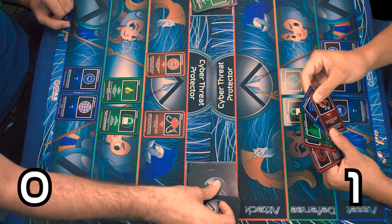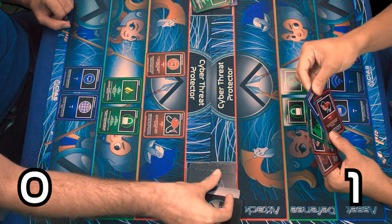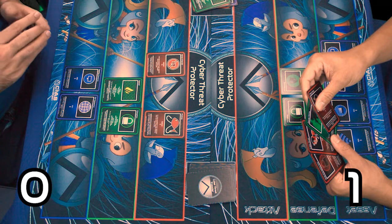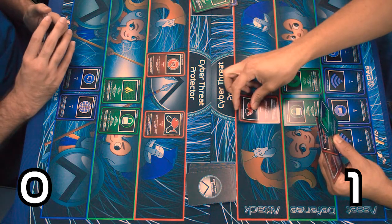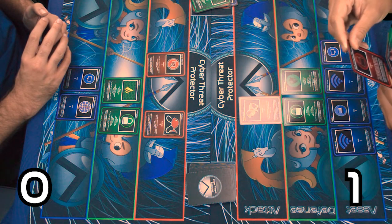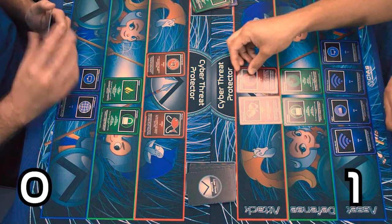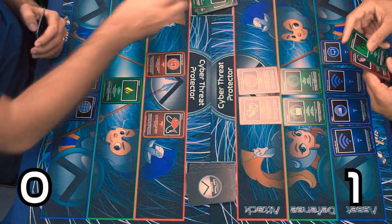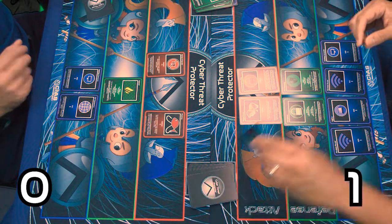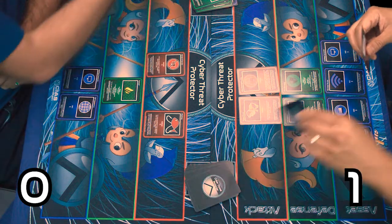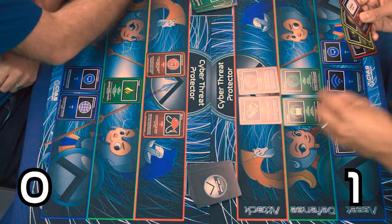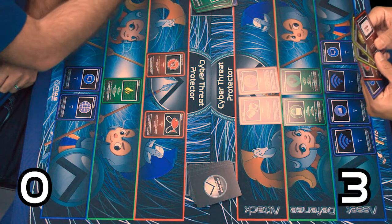All righty. I will play a wireless router and one Trojan horse and a weak encryption key. Oh, I removed my defense. All right, end my turn. So that is two points for me, minus two, another zero. And you gained four, minus two is two points for you. So it's three to zero.